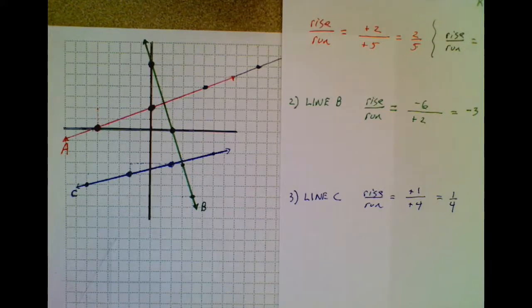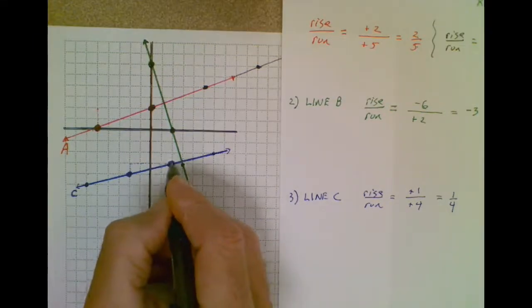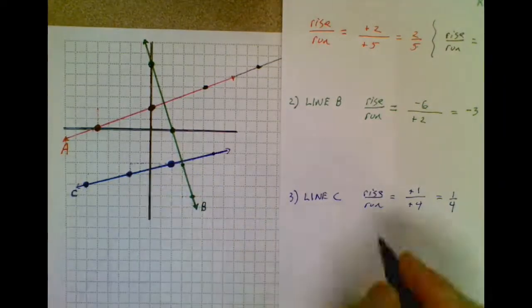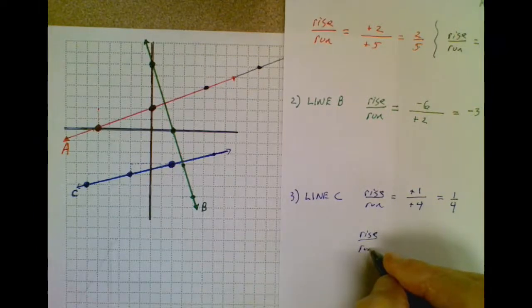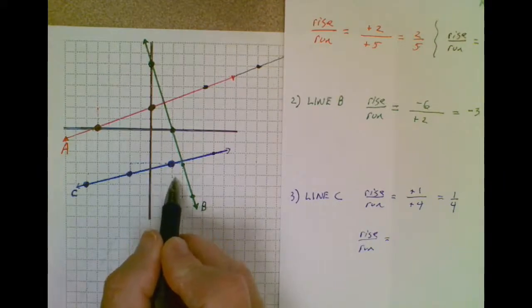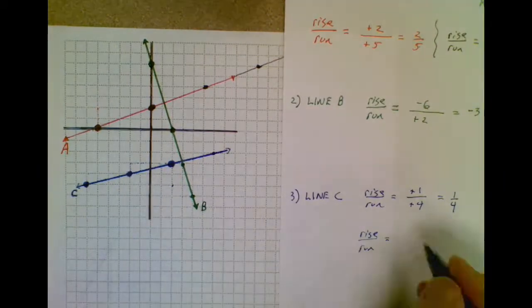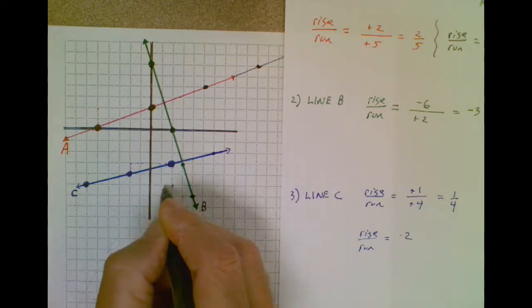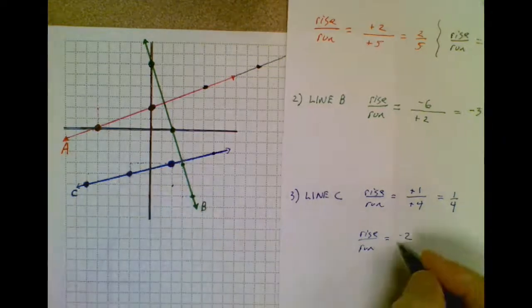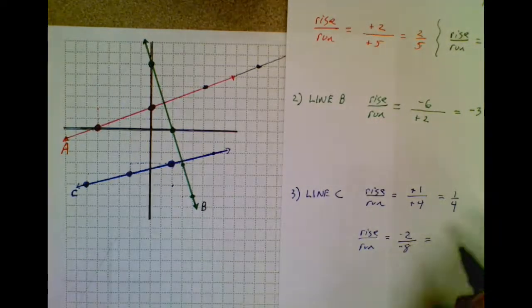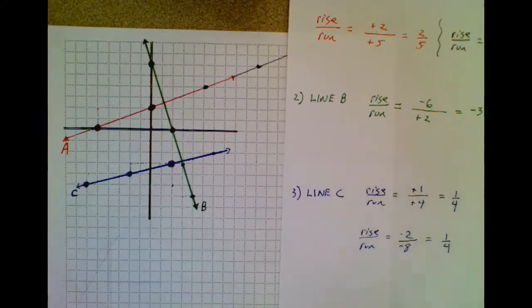Remember, someone else could have used different points. For example, let's say someone used this point and this point and decided to travel from here to here. Their work would look a little different, but we'll agree on the same answer at the end. To go from here to here, my rise is actually a fall of negative two, because I had to go down two units on the y-axis. Then I had to go over on the x-axis in the negative direction eight units. A negative two divided by a negative eight, a negative divided by a negative is a positive, and that reduces to one fourth.